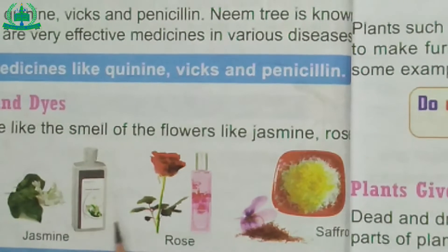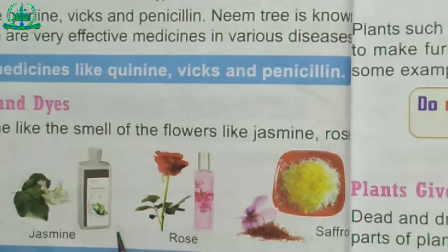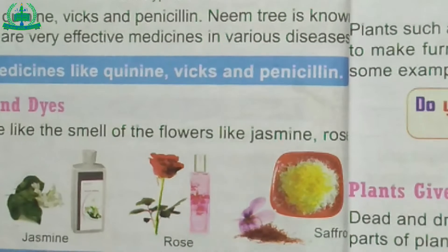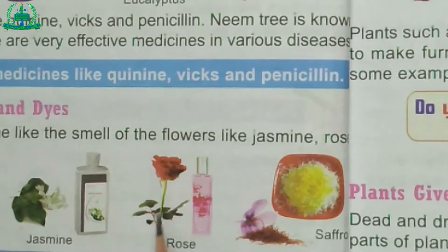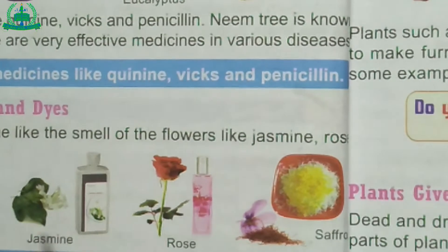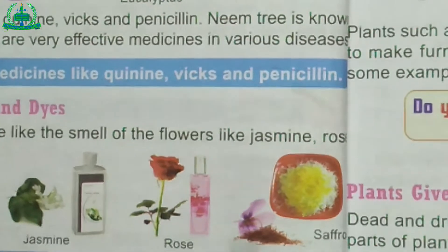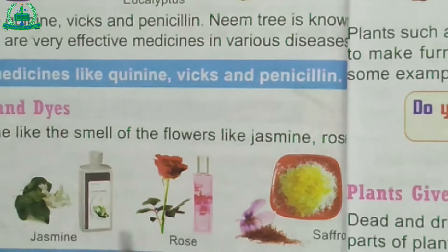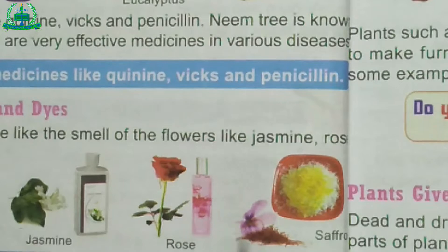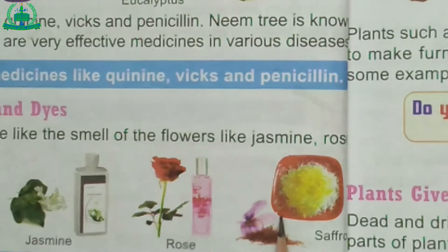Plants give us scents and dyes. Plants give us flowers — as you know, everyone likes the smell of flowers like jasmine, rose and saffron. We like these flowers because of their beauty and good smell.